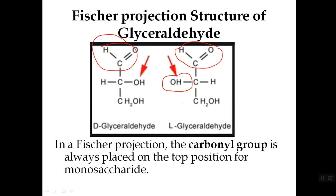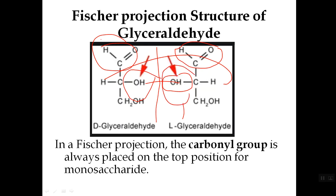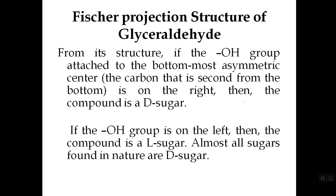Here you can see the structure of D-glyceraldehyde and the structure of L-glyceraldehyde — they are mirror images. If you place a mirror between them, the OH groups will be adjacent to each other and the H atoms will be far apart. In D-glyceraldehyde the OH is towards the right side, and in L-glyceraldehyde it is towards the left side.